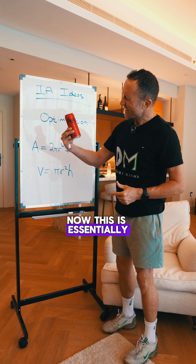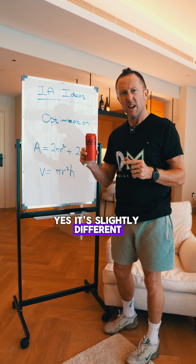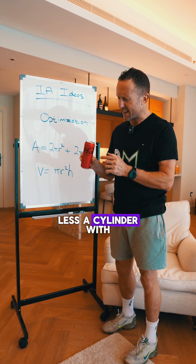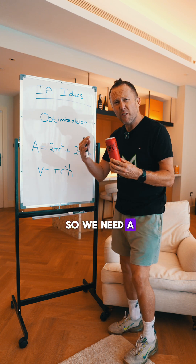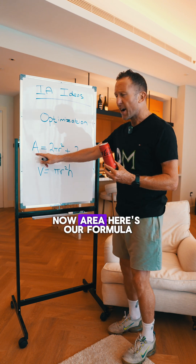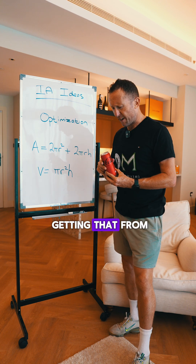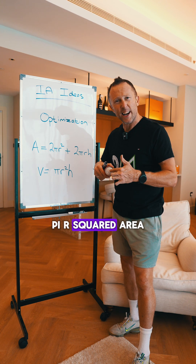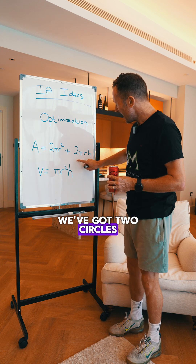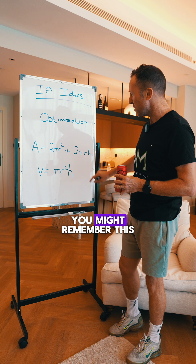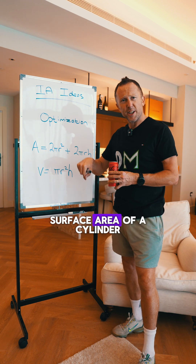This is essentially just a cylinder. Yes, it's slightly different, but it's more or less a cylinder with a circle on the top and a circle on the bottom. So we need a formula for this. Area — here's our formula: 2πr², and where does that come from? πr² is the area of a circle — one at the top, one at the bottom, so we've got two circles. Then 2πrh, which you might remember from IGCSE — this is the curved surface area of a cylinder.